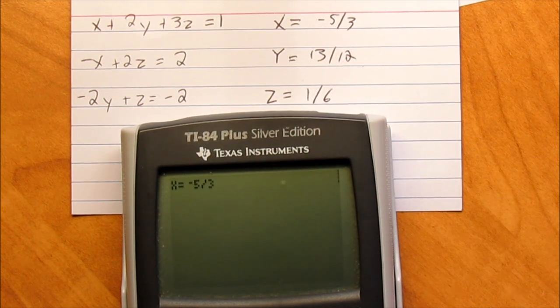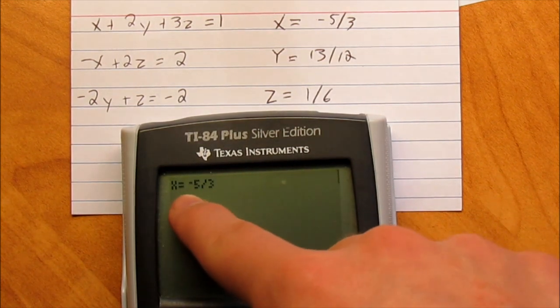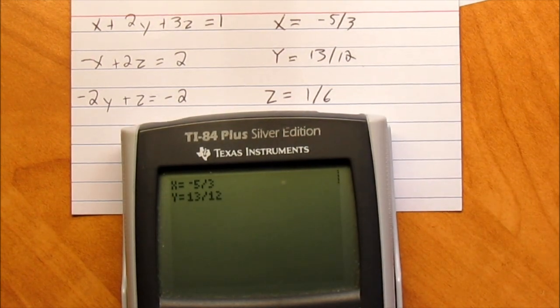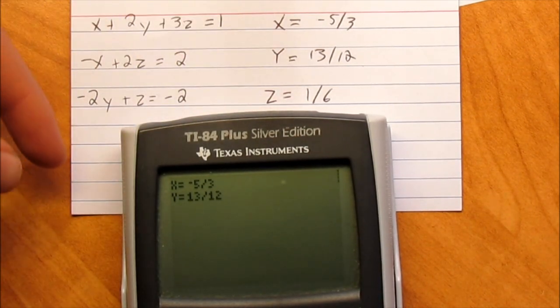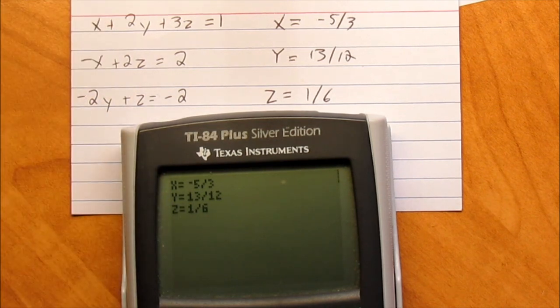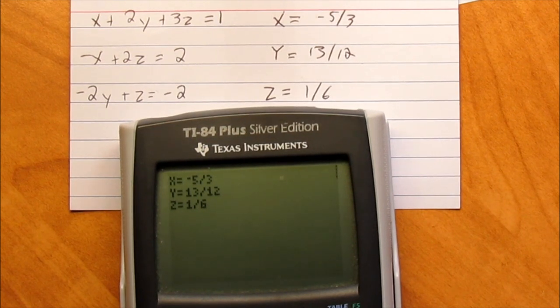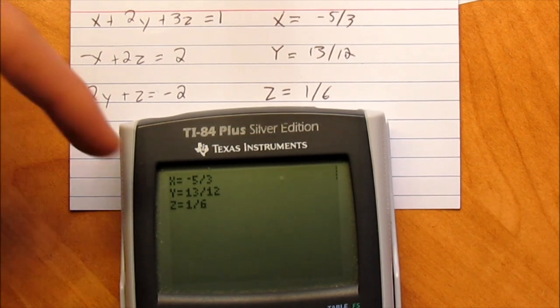So as I said before, this is the simplified form. It's negative 5 over 3, which we can see here. 13 over 12. And 1 over 6. So this is one of those cases where it didn't come out perfect for any of them. And it simplified it. And that's why it needs to be that way.